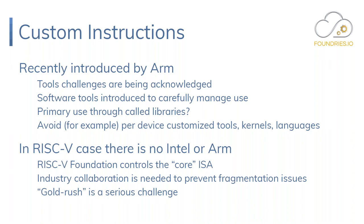You can go and extend RISC-V in any way you want, so industry collaboration is needed to prevent fragmentation. The gold rush in RISC-V is a serious challenge — it says: I'm going to design it, I haven't got time to get this stuff upstream, I'm going to do whatever it takes to get my product to market because that's how I'm going to get paid. And that is not a recipe for scaling out in the industry.